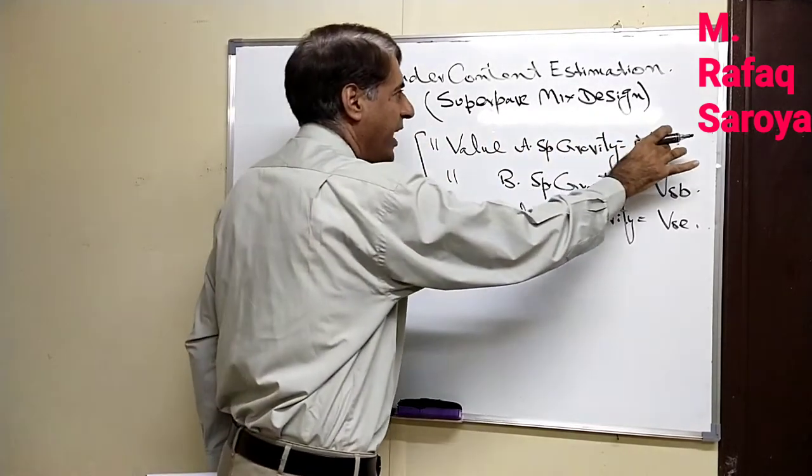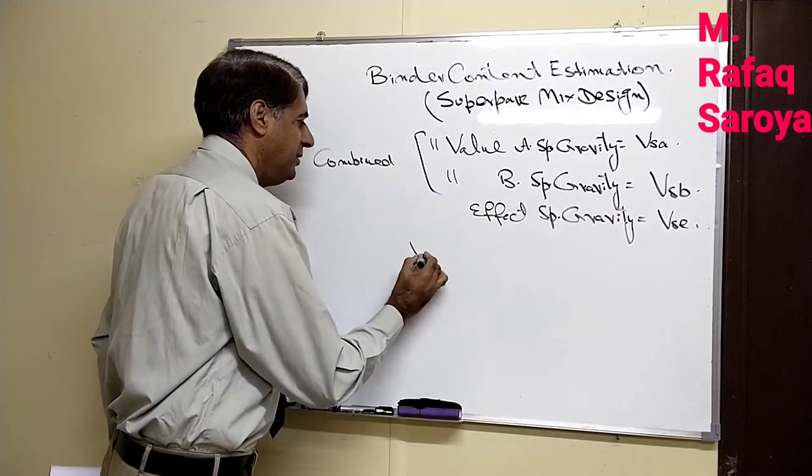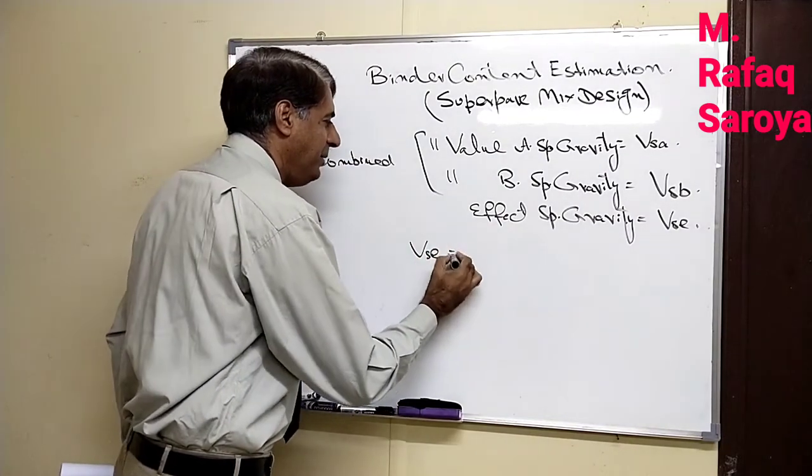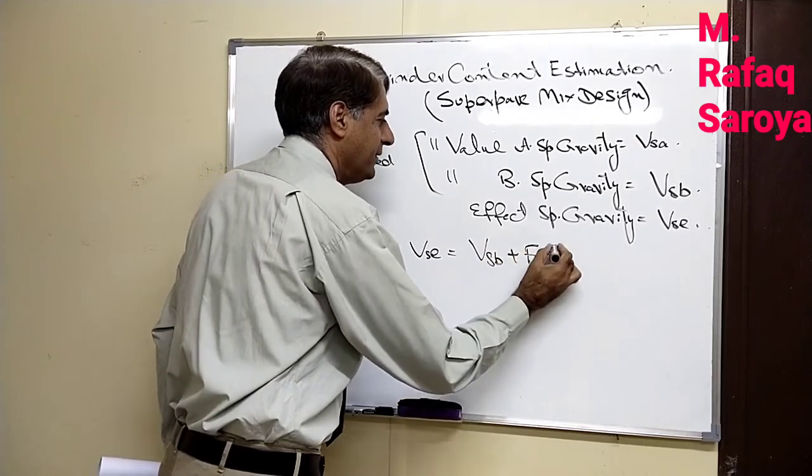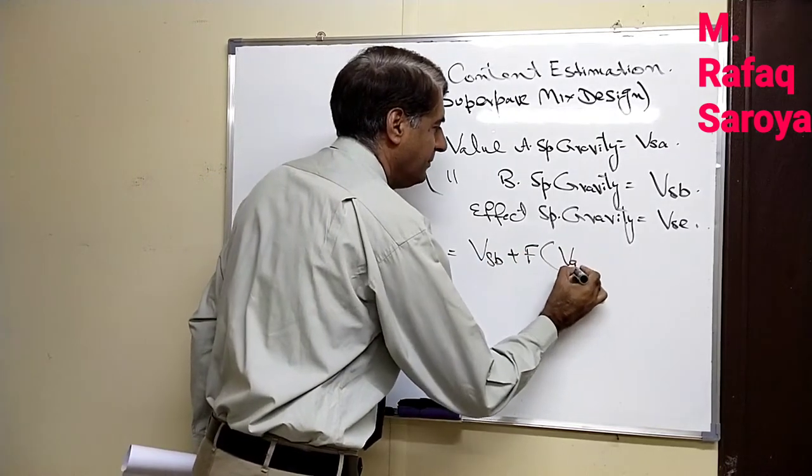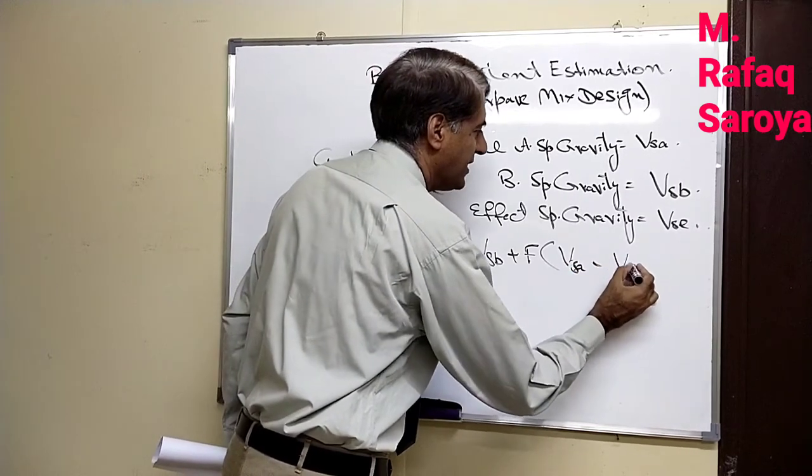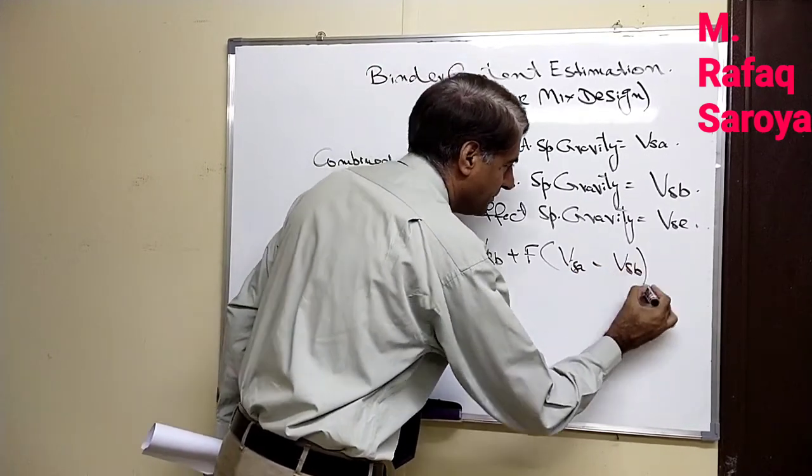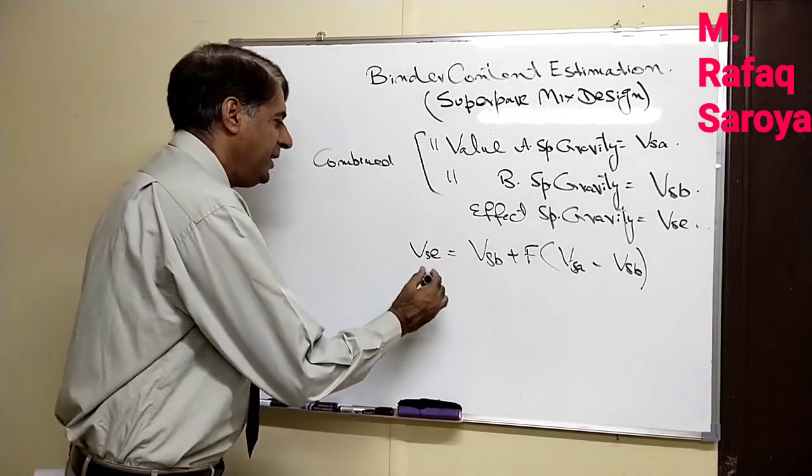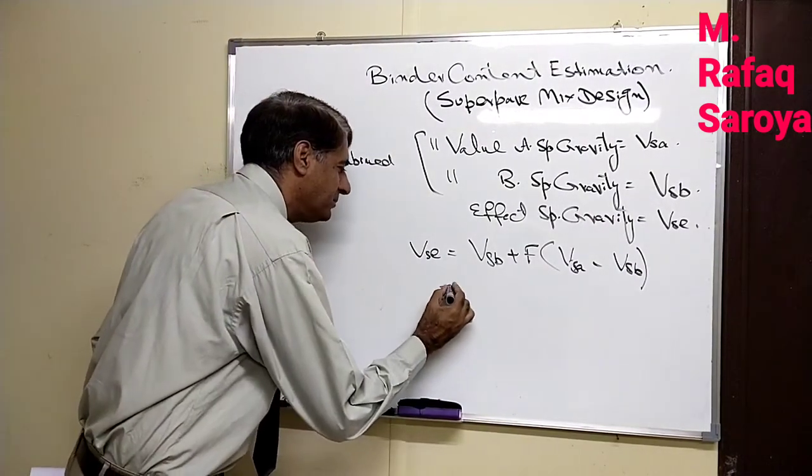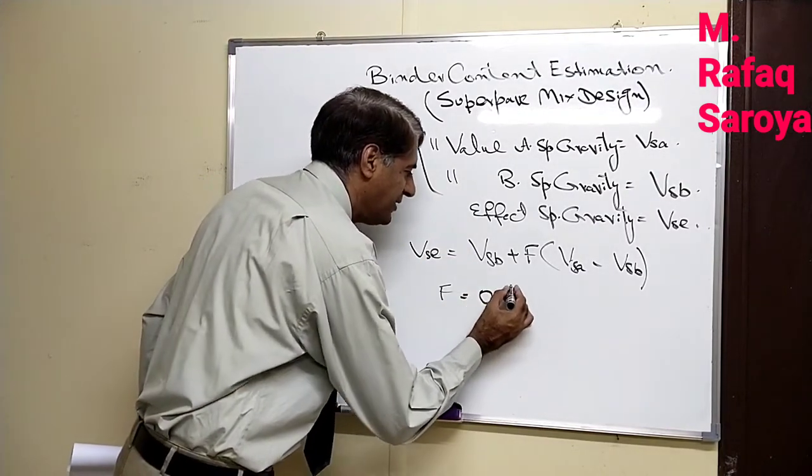If these combined values are known to us, this effective specific gravity GSE can be found out by the following relation: GSB plus F times (GSA minus GSB). So keep this in mind, here F is our absorption factor which we will assume as 0.6.